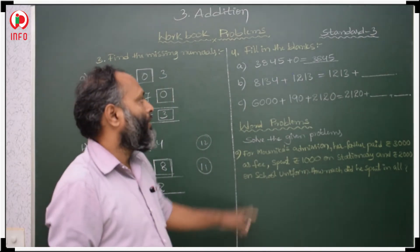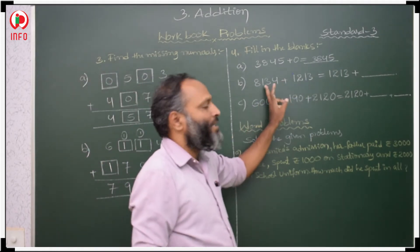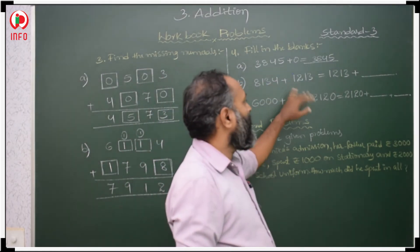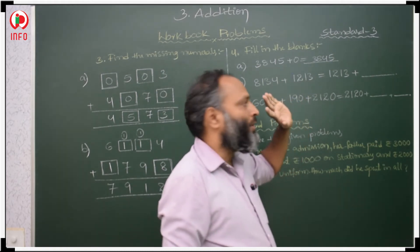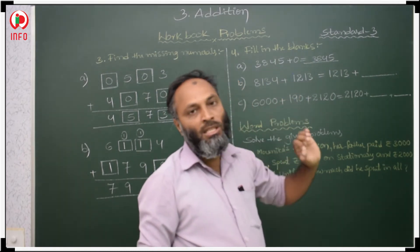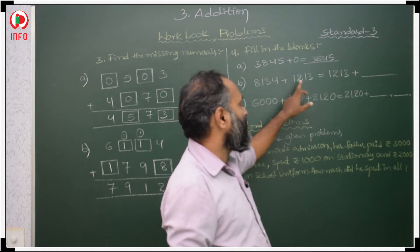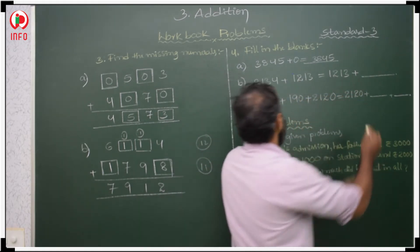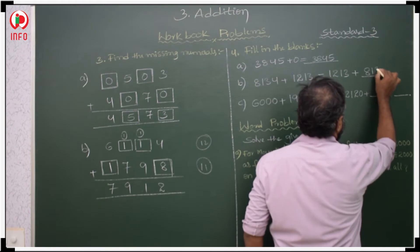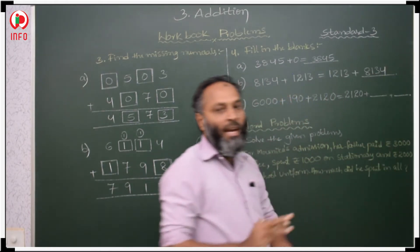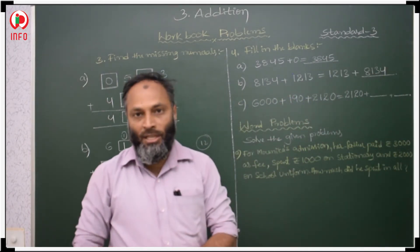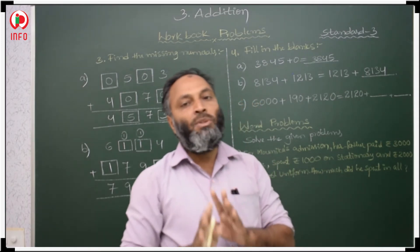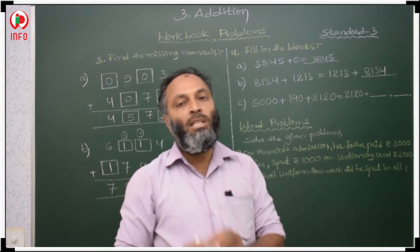Now, the order of the addends will change but the sum is constant — there is no change in the sum. So here: first addend plus second addend is equal to second addend plus first addend. We have to write the first addend there. The sum remains the same.